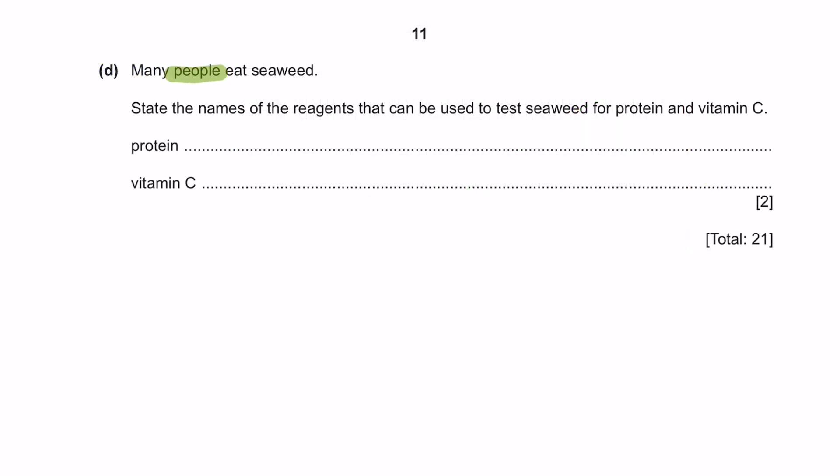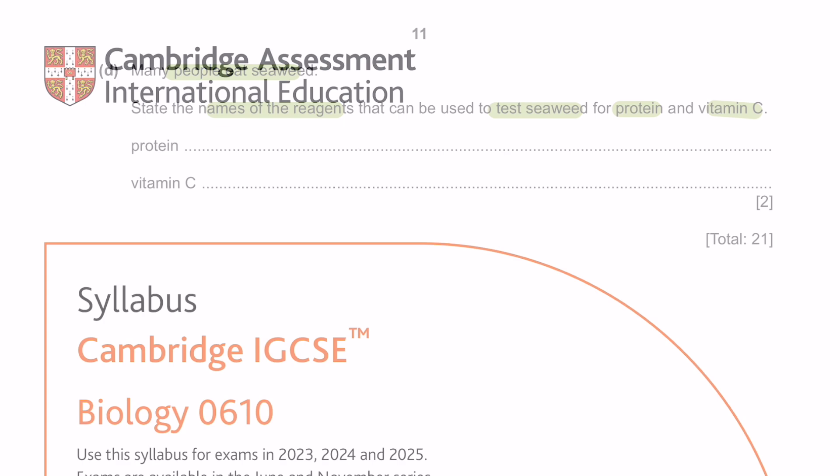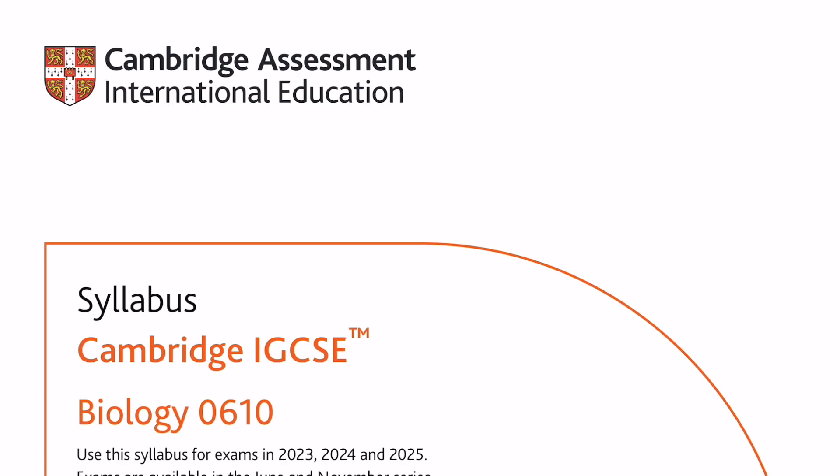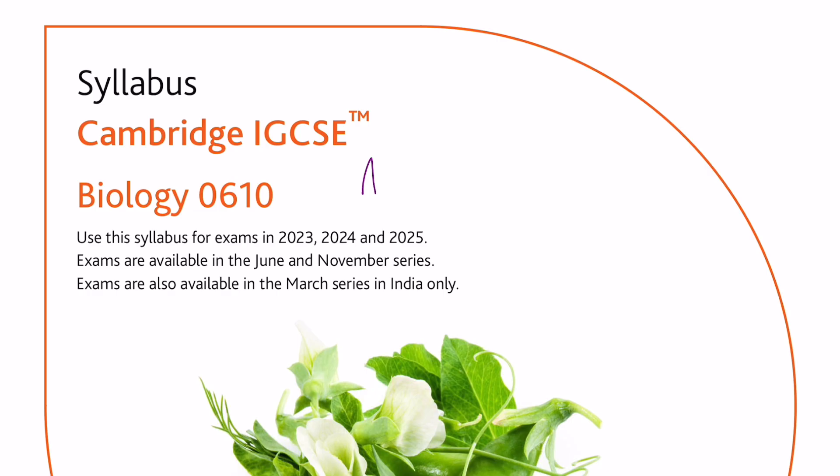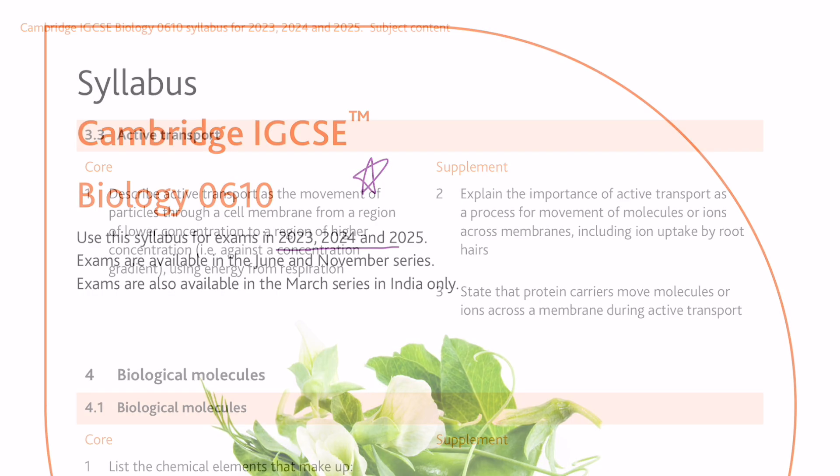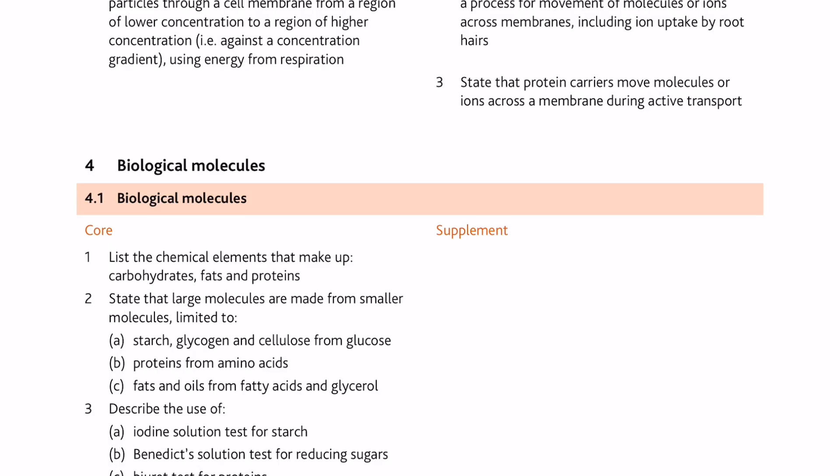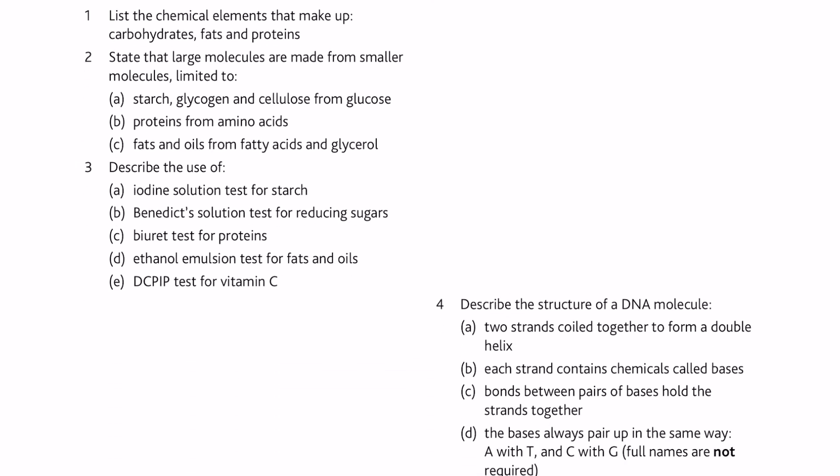Question D. Many people eat seaweed. State the names of the reagents that can be used to test seaweed for protein and vitamin C. You are tested again with the theory of the syllabus and if you don't know your syllabus theory, you can always refer to the course specification. Make sure you are looking at the right one. I will include the link to this in the description box below. If you go to chapter 4, you will see all the food tests that you need to know. For proteins, you are going to use a biuret test and for vitamin C, it will be a DCPIP test.